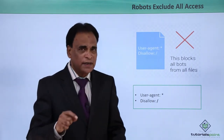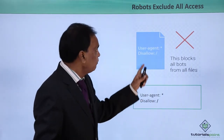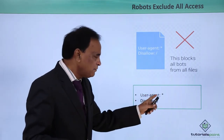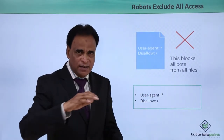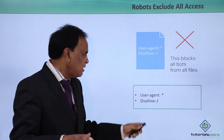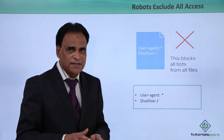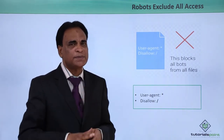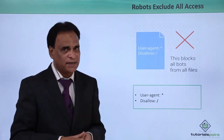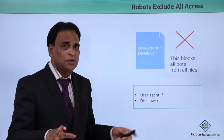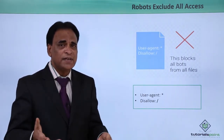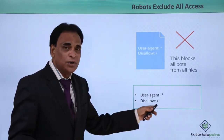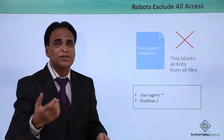Now, what about excluding access? For 'robots exclude all access,' the first line is the same — user-agent star for all search engines. But when you say 'disallow backslash,' it means you are not allowing any search engine to crawl or index your website. This is actually a serious problem, because when you have a website you obviously need search engines to crawl and index your pages.